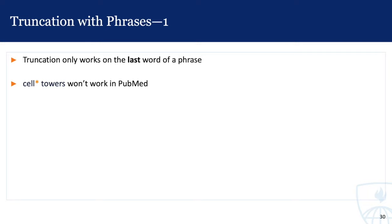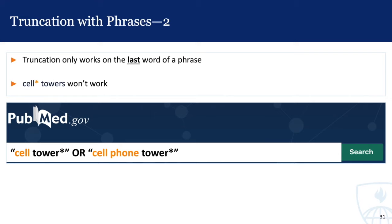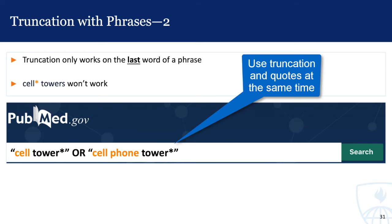One important thing to note about truncation in PubMed is that you can only truncate the last word of a phrase. So you can't search cell* towers to get cell phone towers, even though it makes sense logically. Instead, you would have to type out each phrase and use an OR — so cell tower* OR cell phone tower*, putting those phrases in double quotes. In PubMed you can now use truncation and quotation marks together to keep the phrases together, which is a new feature introduced in PubMed's latest upgrade.